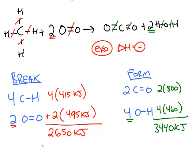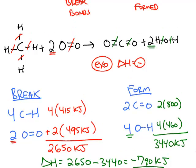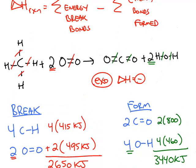So to find the overall delta H, we just take the input of energy, 2,650, minus the output, 3,440, which gives us a negative 790 kilojoules. That negative makes sense because we knew that this particular reaction releases energy rather than absorbs energy.